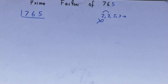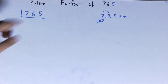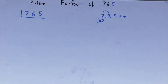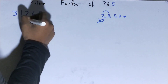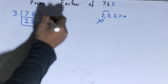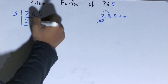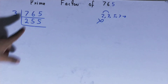That is 3. Is 765 divisible by 3? Let's check: 3 twos are 6, 3 fives are 15 — yes, it is divisible by 3. So divide it: 3 twos are 6, 3 fives are 15, so you will be left with 255.